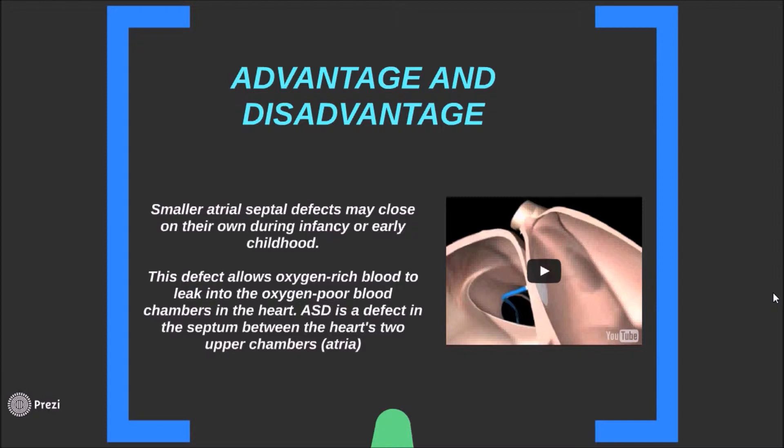Smaller atrial septal defects may close on their own during infancy or early childhood. The defect allows oxygen-rich blood to leak into the oxygen-poor blood chamber of the heart. ASD affects the septum between the heart's two upper chambers, or atria.